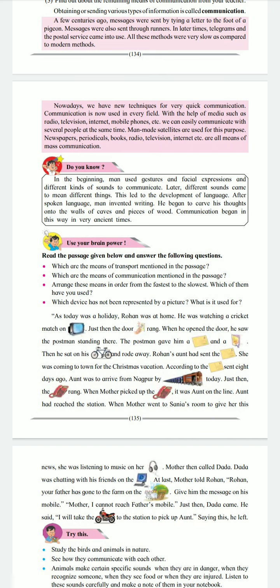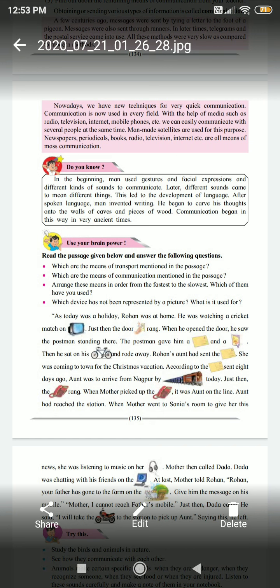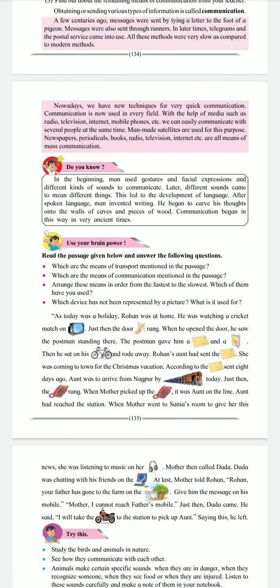At last, mother told Rohan, 'Your father has gone to the farm on the tractor. Give him the message on his mobile.' Mother, I cannot reach father's mobile. Just then, Dada came. He said, 'I will take a vehicle to the station and pick up aunt.' Saying this, he left.